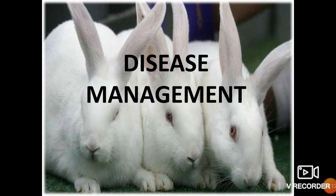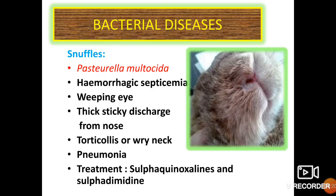Next is disease management. Some commonly occurring diseases in rabbits. First, bacterial diseases: Pasteurella multocida causes snuffles. Clinical signs include hemorrhagic septicemia, weeping eyes with continuous discharge, thick sticky discharge from the nose, torticollis or wry neck, and pneumonia. Treatment includes sulphadiazine and sulphadimidine.